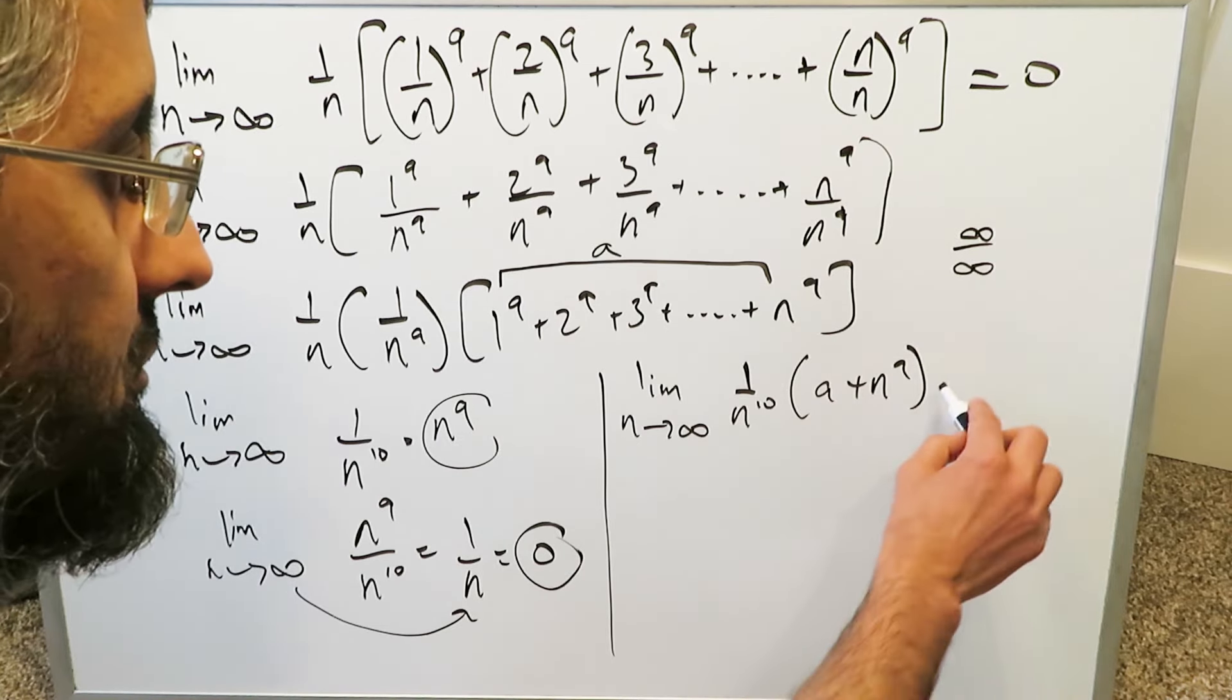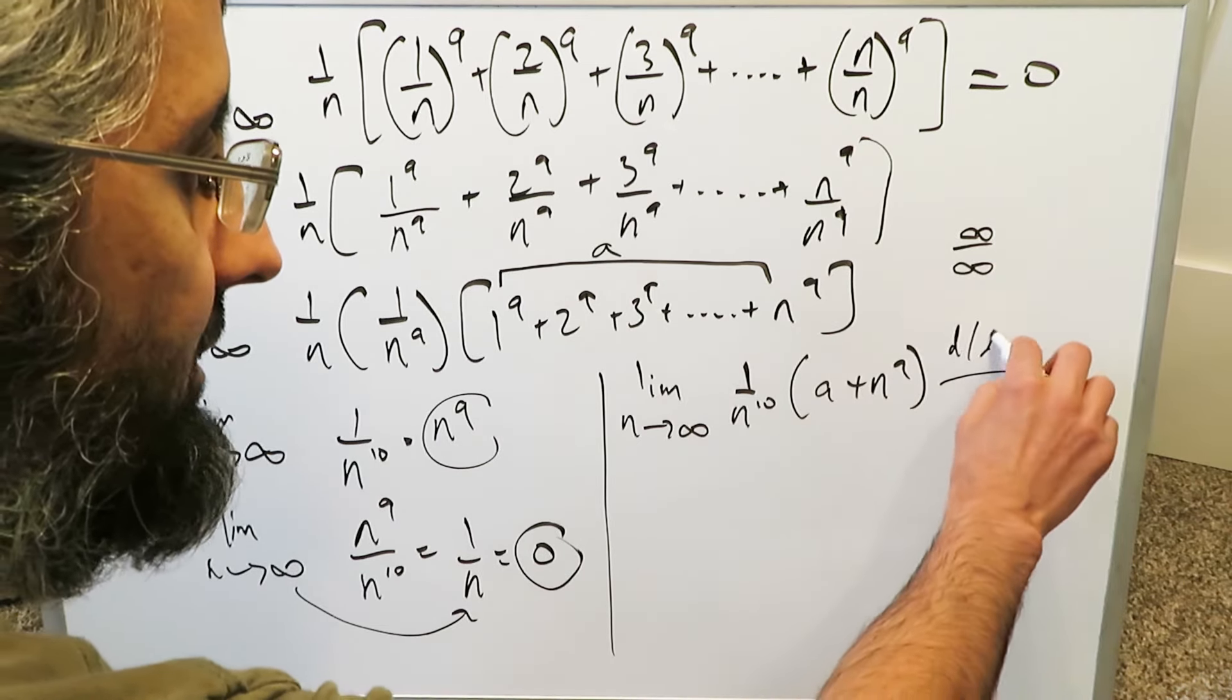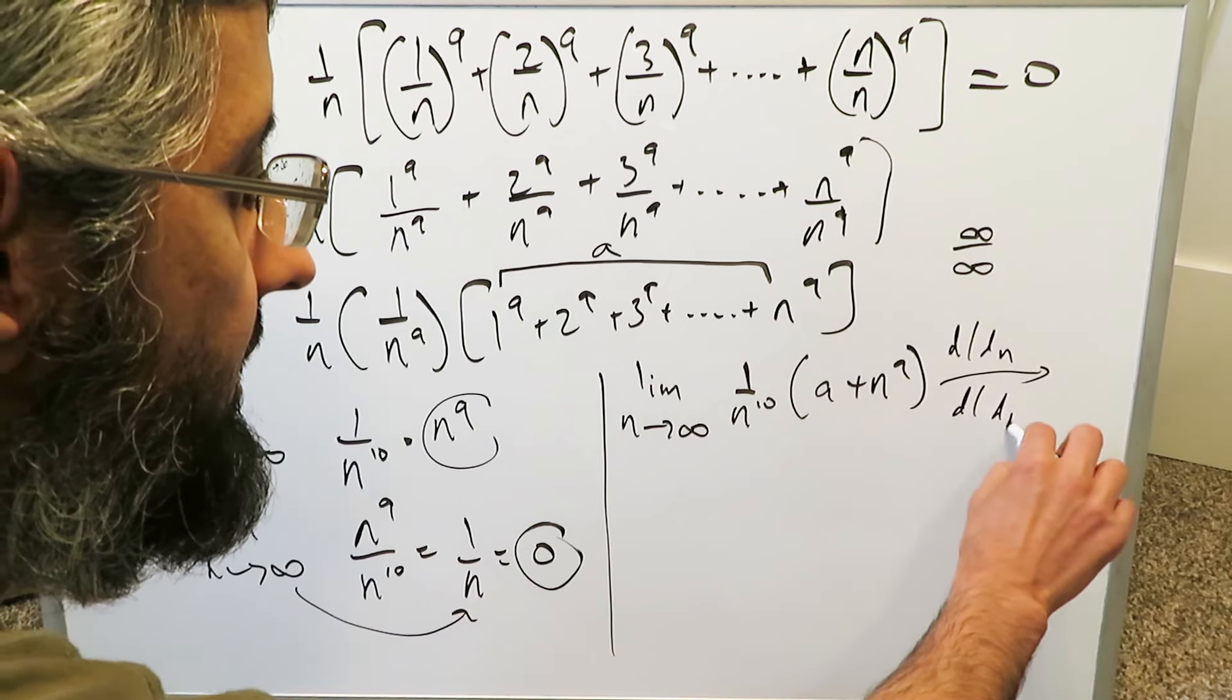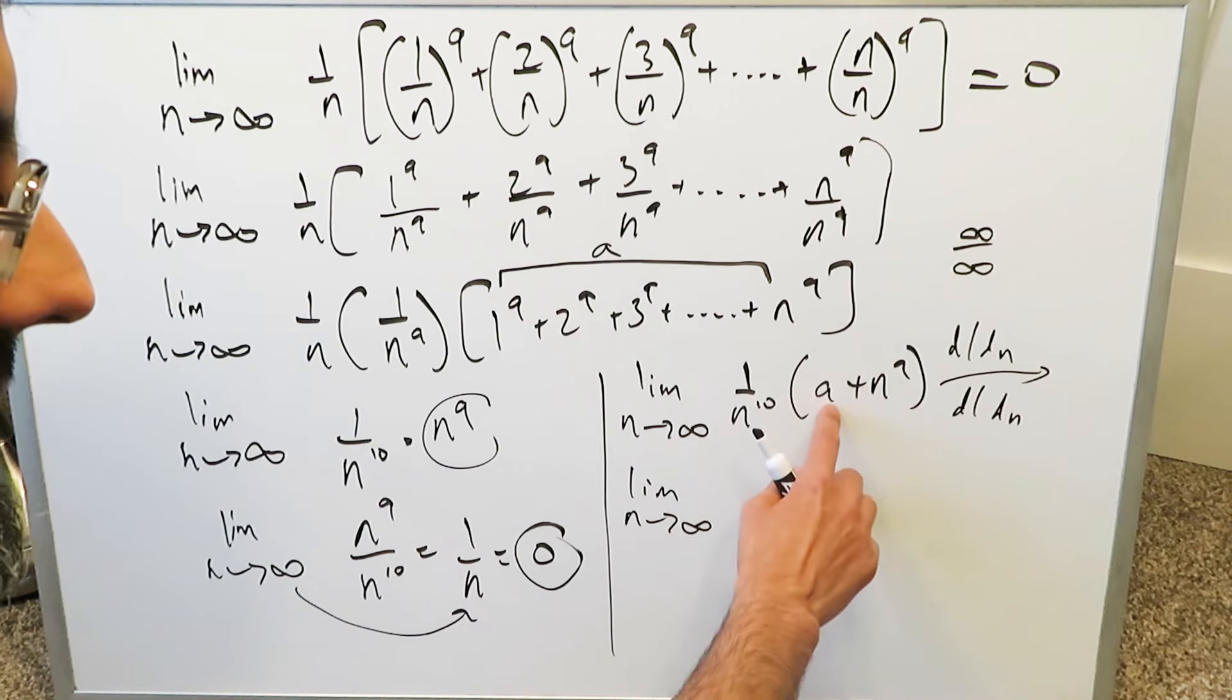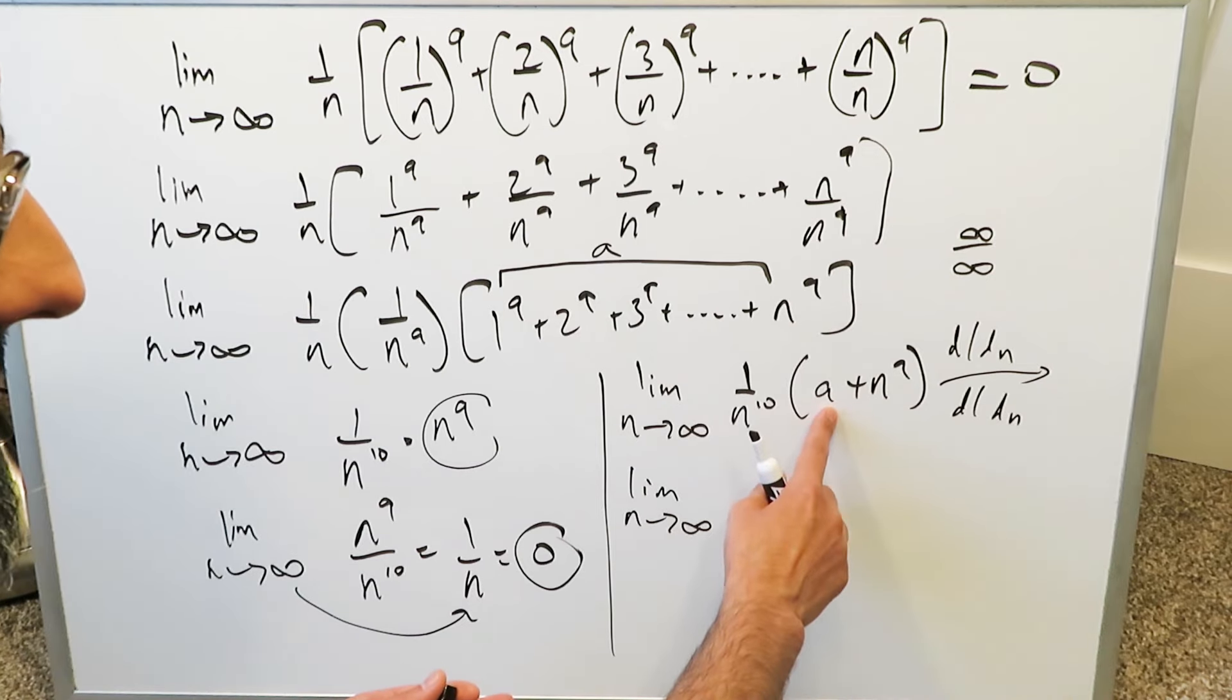In all cases the n is a variable here. You'd be looking at limit as n approaches infinity. The derivative of this numerator is not hard. The a is a constant. Derivative of constants is 0. You're just looking at n to the 9. It becomes 9 n to the power of 8.